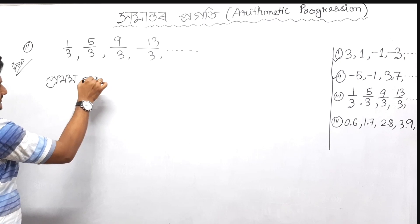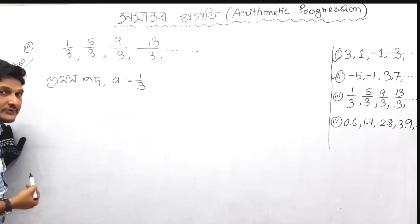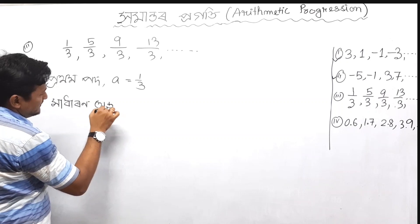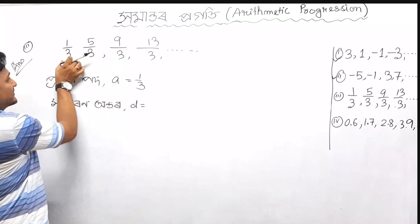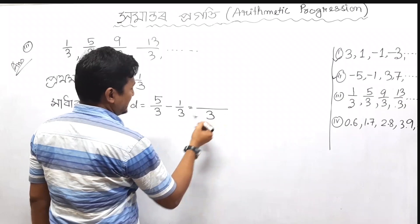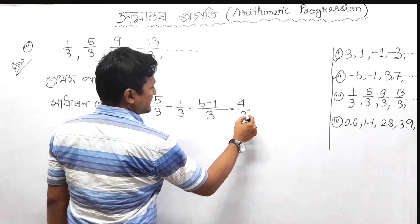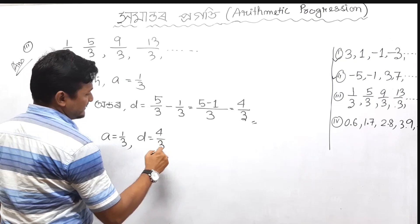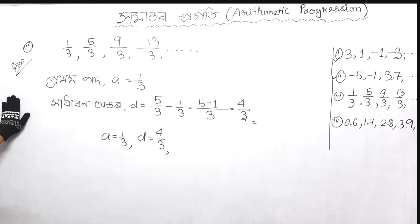The first part is 1 by 3. I will get the same thing. 5 by 3 minus 4, 1 by 3. LCM 3: 5 minus 1 = 4 by 3. If you do it, you will get 1 by 3, 9 by 3, 4 by 3, 5 by 3 — I will make the same thing.